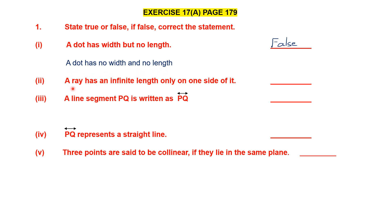Next one. A ray has infinite length only on one side of it. A ray has an arrowhead on one end, which indicates that side goes on continuously, whereas the other end has a fixed point. So the statement — a ray has infinite length only on one side of it — is true. Only on the side with the arrowhead does the ray have infinite length. On the other side there is a fixed point; it doesn't continue there.